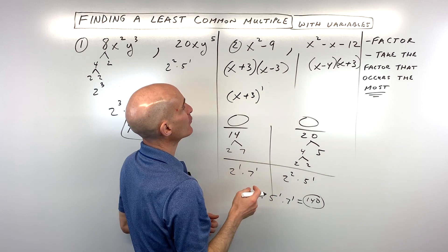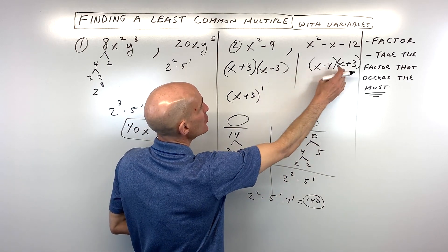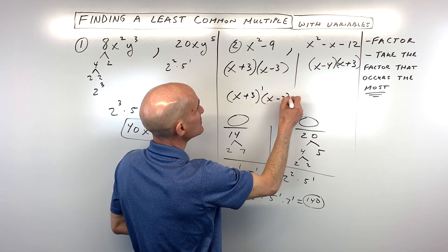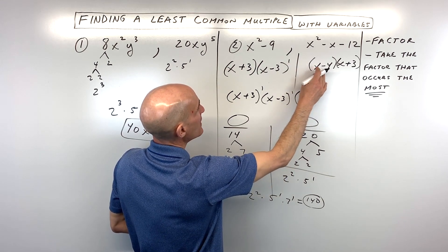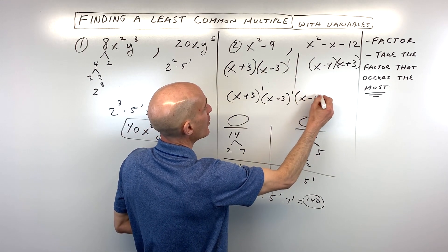Here we have an x minus 3, no x minus 3, we're going to need whichever one occurs the most, which you can see there's 1 here. And then we have an x minus 4, no x minus 4, we need 1 x minus 4.